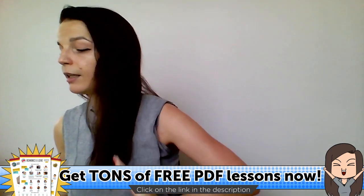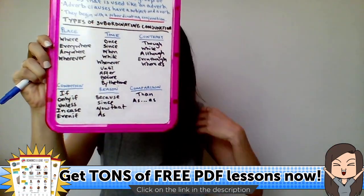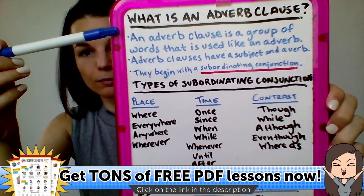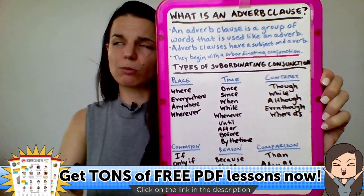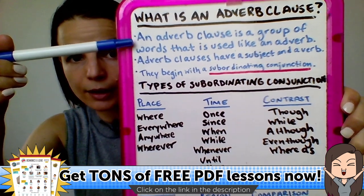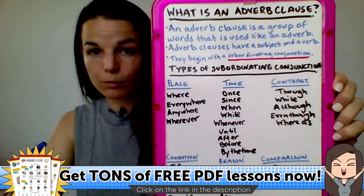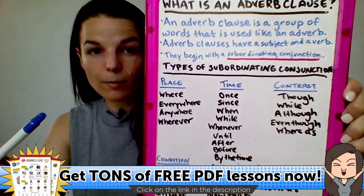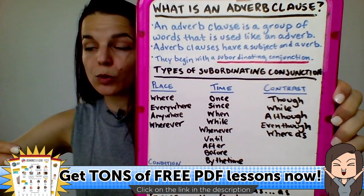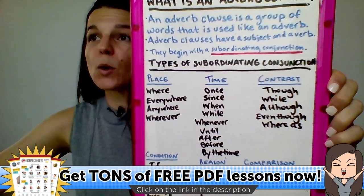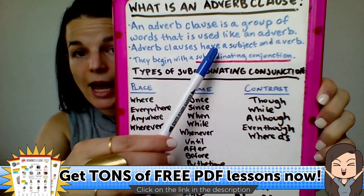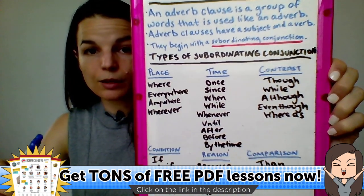Let's begin by looking at a definition: what is today's grammar point? What is an adverb clause? You might also see 'adverbial clause.' An adverb clause is a group of words that is used like an adverb. An adverb is a word like 'quickly' or 'slowly' — it tells us how we do something, the manner or the reason. Adverb clauses have a subject and a verb — we need both of those parts.